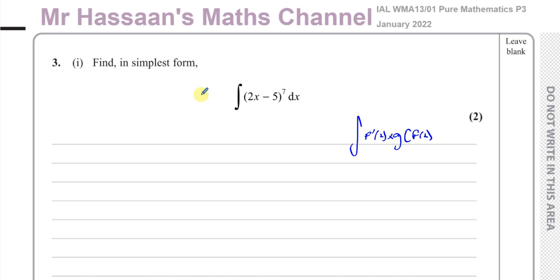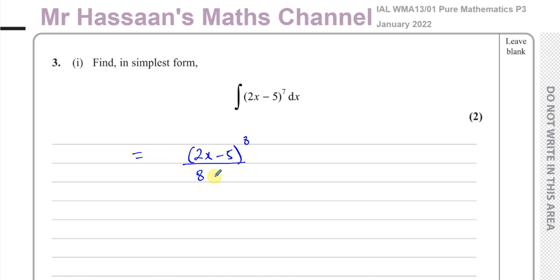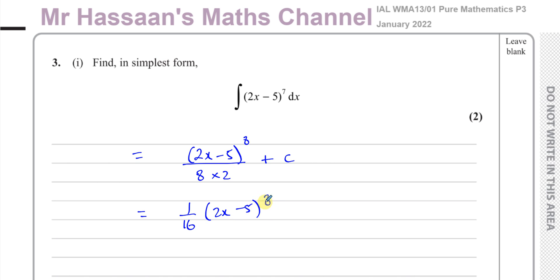So when you have to find the integral of something like that, we can use what's called the reverse of the chain rule. Basically, what you do is you integrate this thing as normal. You have this bracket to the power of something — a polynomial type of form — integrates by adding 1 to the power. So you have (2x minus 5) to the power of 8, then you divide by the new power, which is 8, and then you also divide by the differential of what's inside the function, which is 2. So you multiply that denominator by 2 as well, and then put plus c. This gives 1 over 16 times (2x minus 5) to the power of 8 plus c.